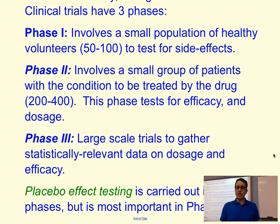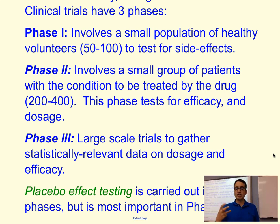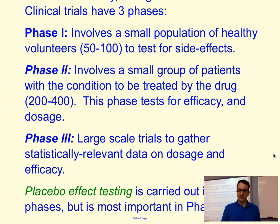Phase two involves a small population of test subjects who actually have the condition we want to treat. We test for efficacy and for dosage — how large a dose is needed in order to be effective and to have the therapeutic effects.